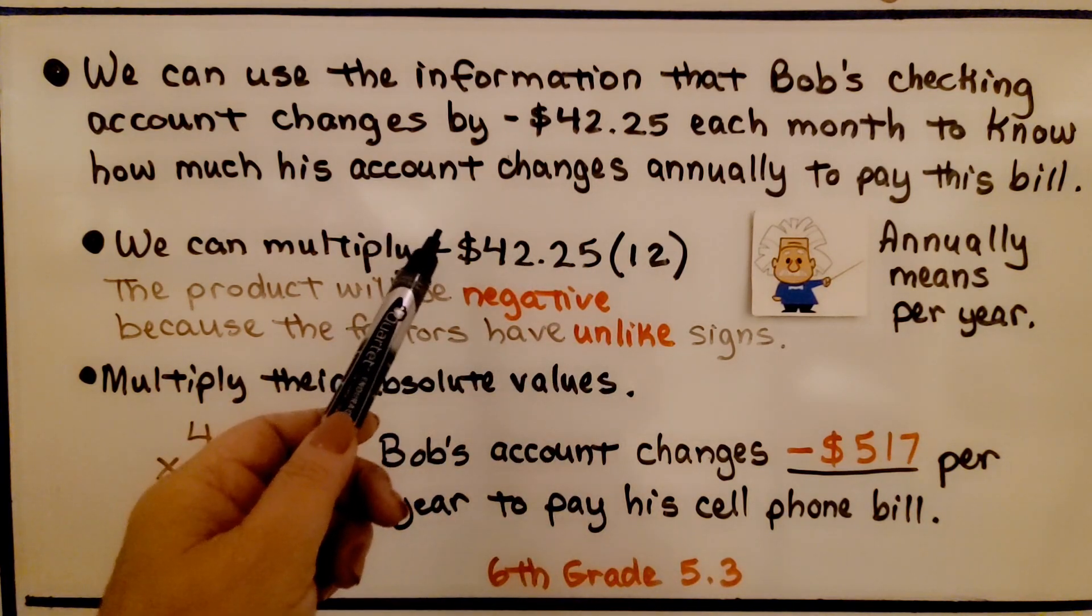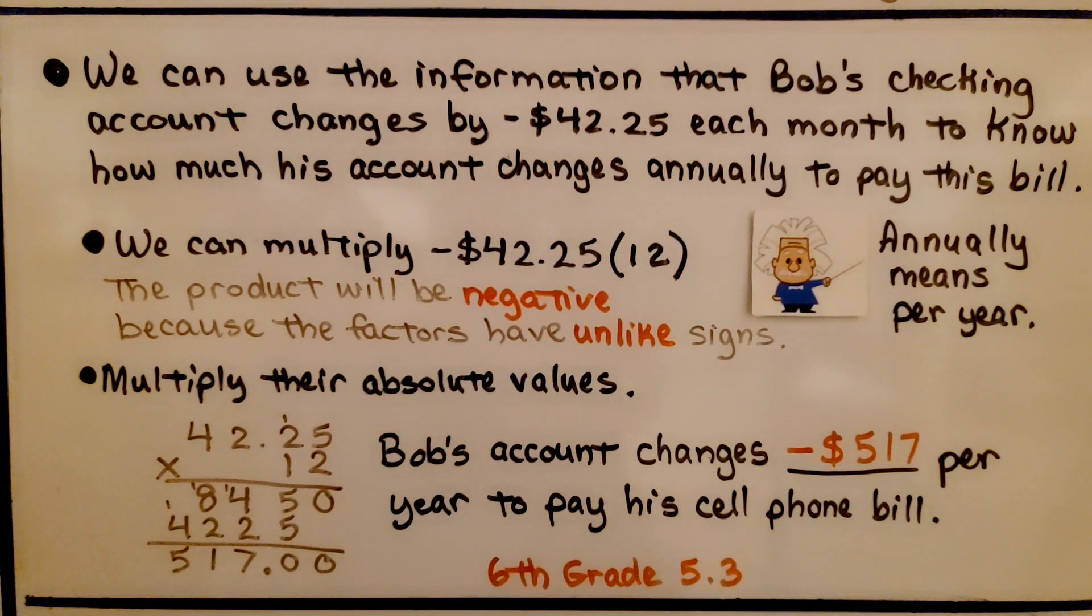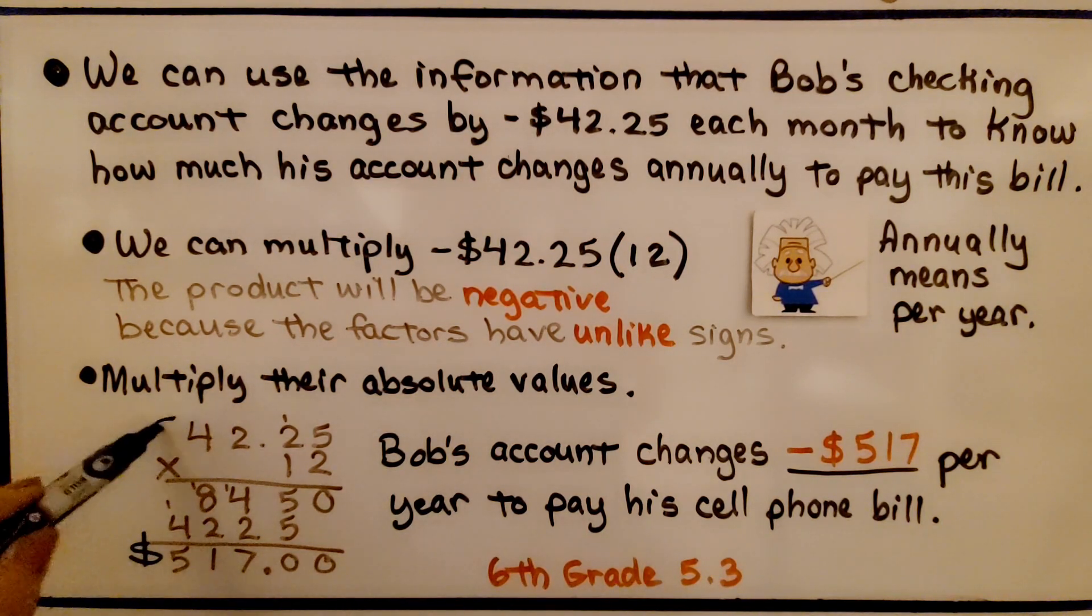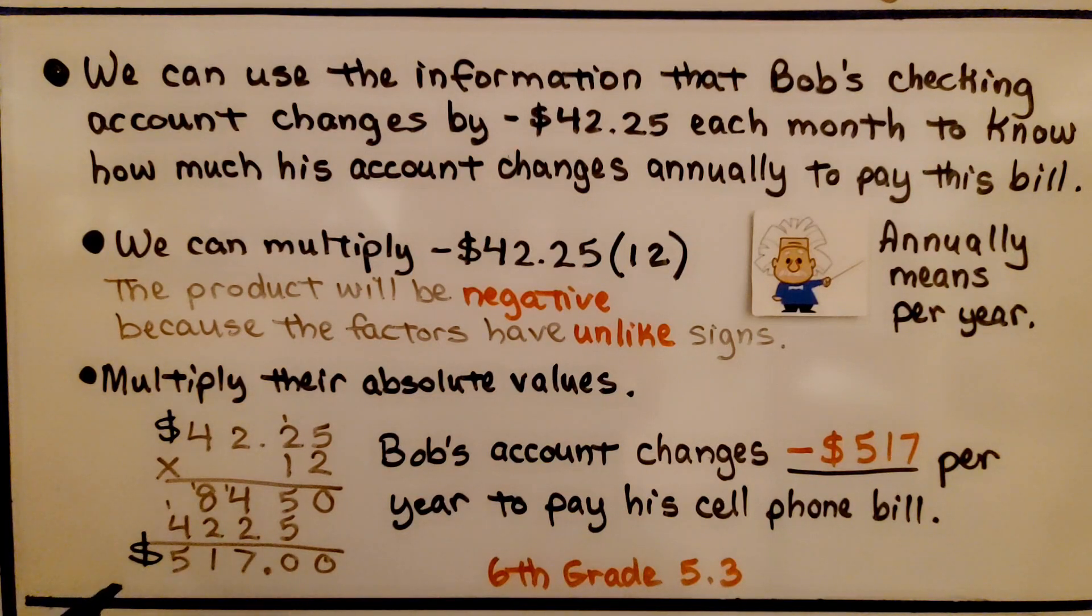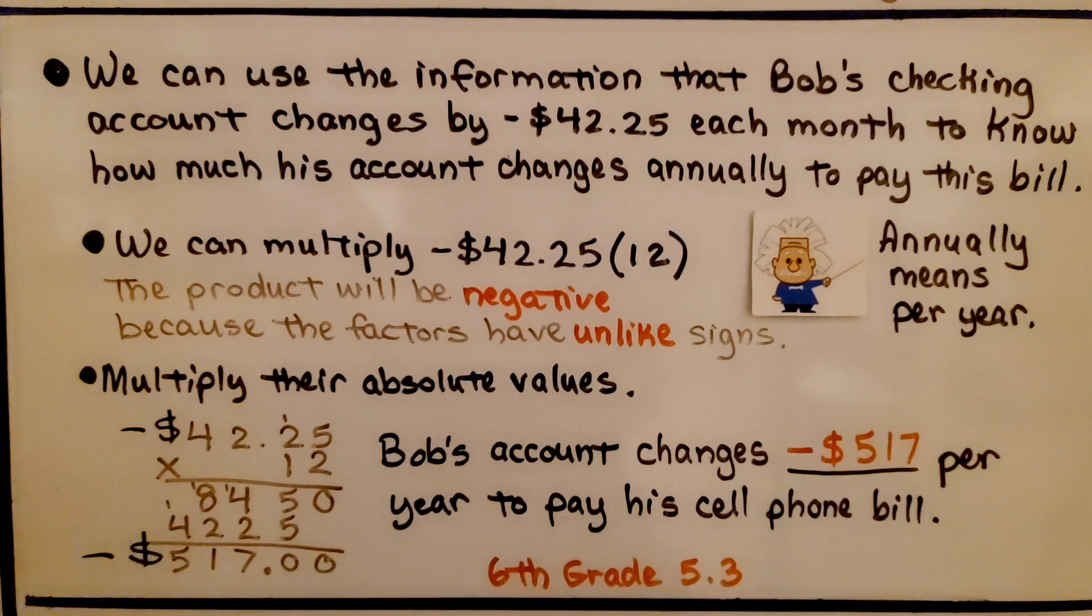We multiply their absolute values and get $517. We know it's going to be negative because this was negative $42.25 times a positive. So Bob's account changes negative $517 per year to pay his cell phone bill.